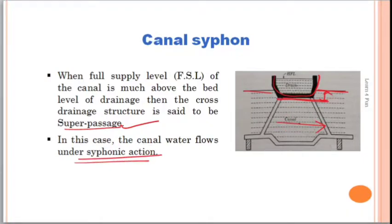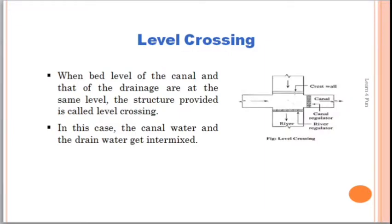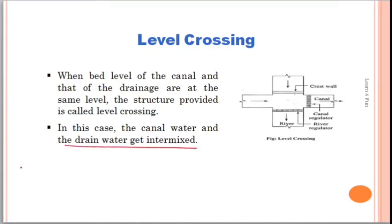Next, level crossing. In the case of level crossing, the canal and the drain run at the same level. When the bed level of the canal and that of the drainage are at the same level, the structure provided is called a level crossing. In this case, the canal water and the drain water get intermixed. Sometimes inlet type and outlet type level crossings are also used.